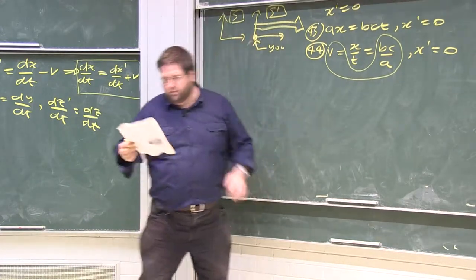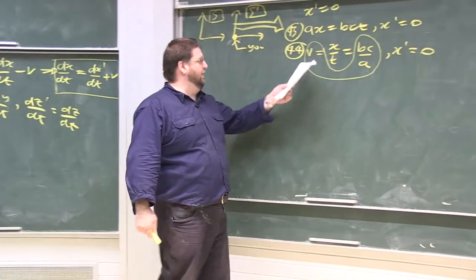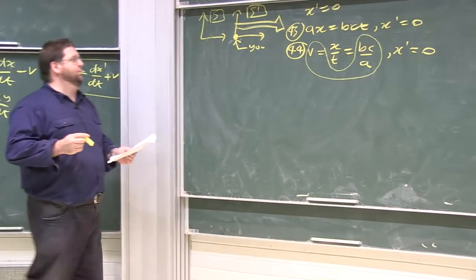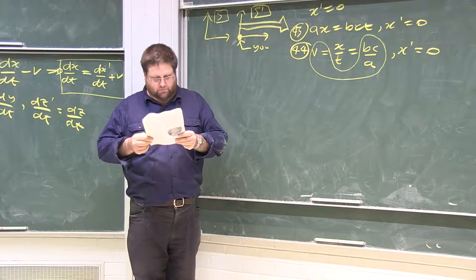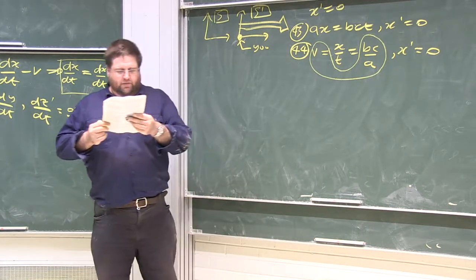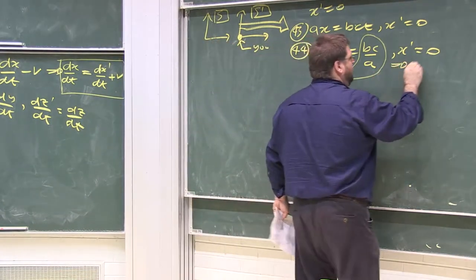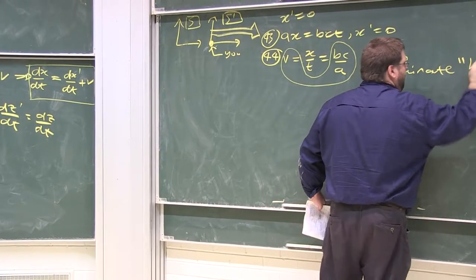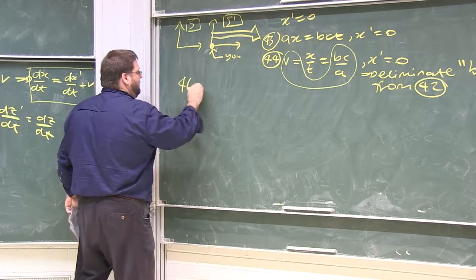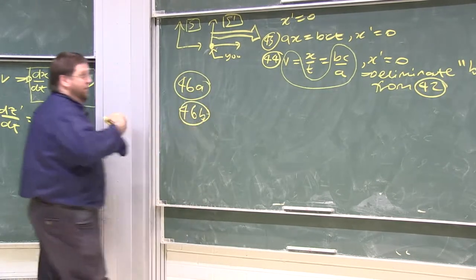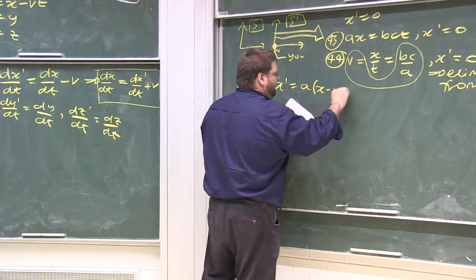Using v equals BC/A to eliminate B from equations 42A and B, we get equations 46A and B. We've eliminated B — all we need now is to work out the mysterious A in these linear transformations, which will ultimately become the Lorentz transformations. To work out A we use another piece of Einsteinian logic involving a ruler thought experiment and symmetry.